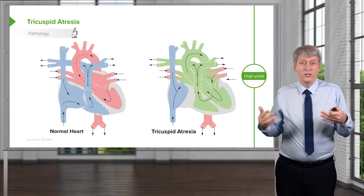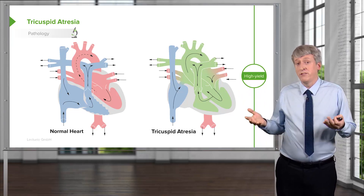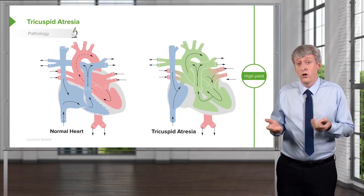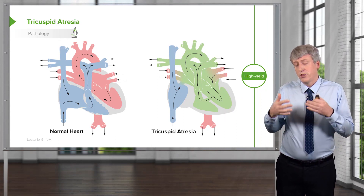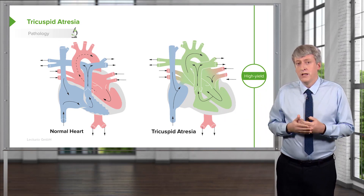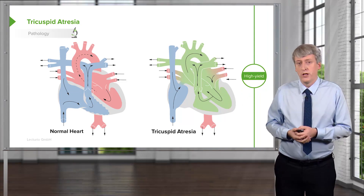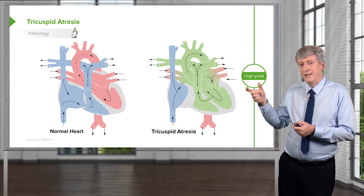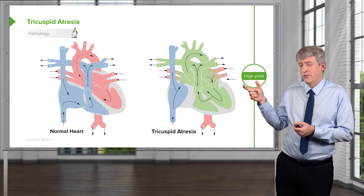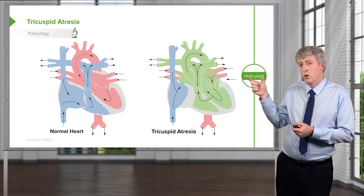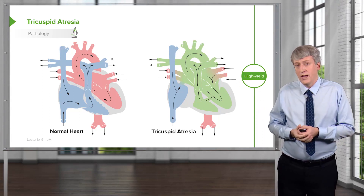Eventually, by the time the operation is completed, they'll have passive blood flow that does not go through the heart at all, returning all blood from their body to their lungs. This is a three-stage operation. Typically at birth they have something called a Blalock-Taussig shunt placed, which is sort of like a continuing patent ductus arteriosus between the pulmonary artery and the aorta, allowing that mixing to continue to happen.